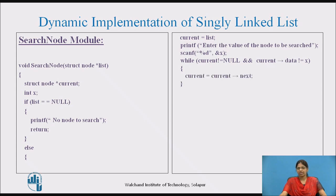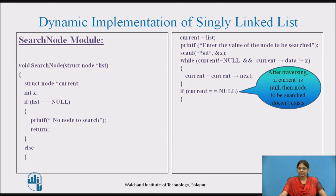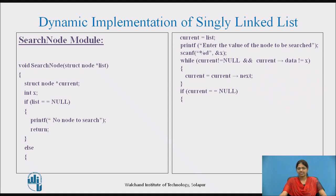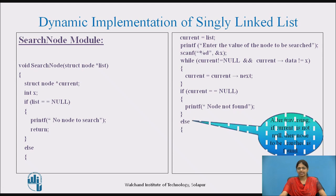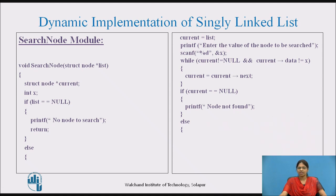Each time the traversal condition is true, current is moved to the next node. If current is null after traversal, the node to be searched is not found, and we print that the node is not found. Else if current is not null, the node has been found, and we display the message that the node is found.